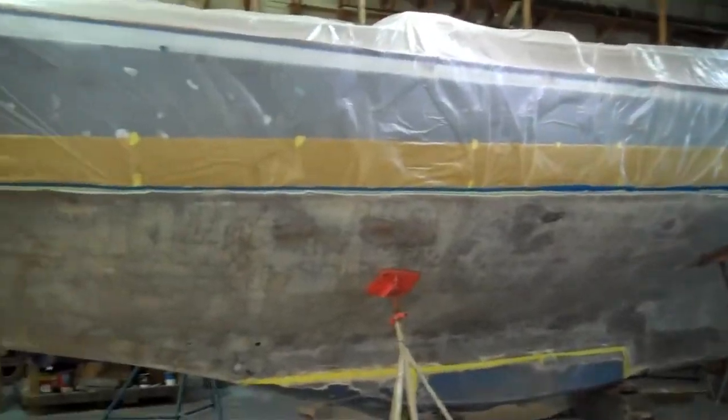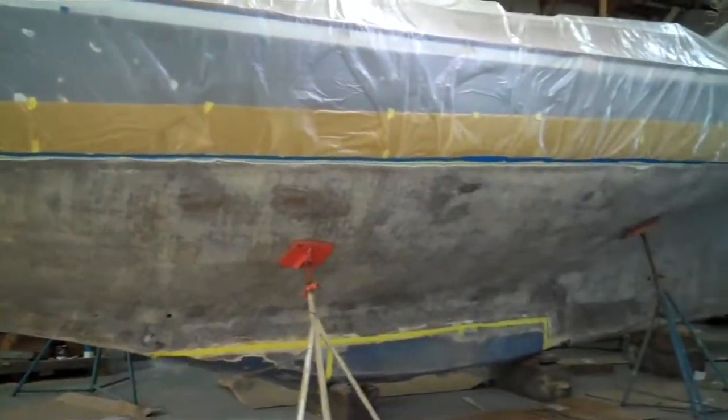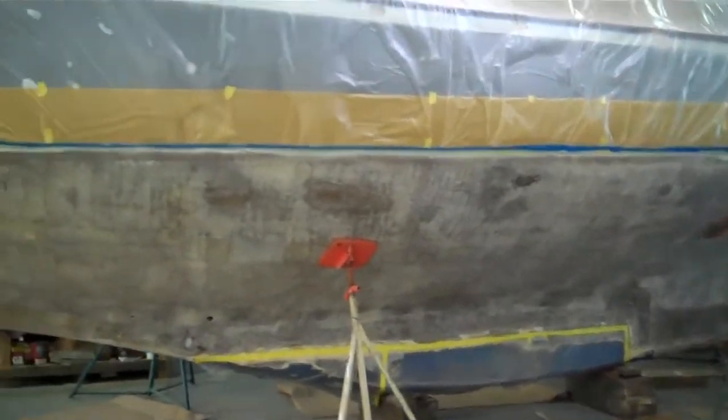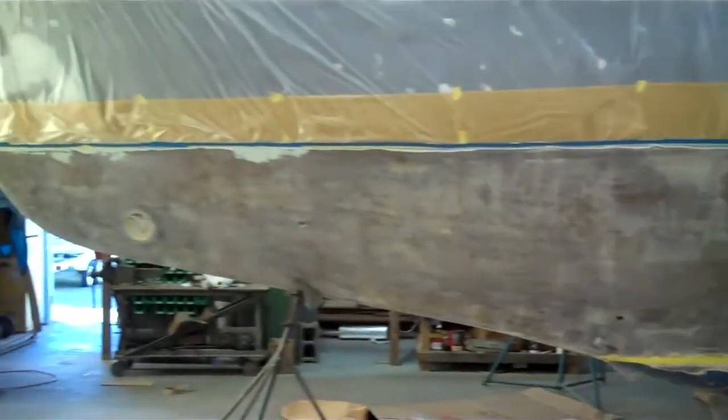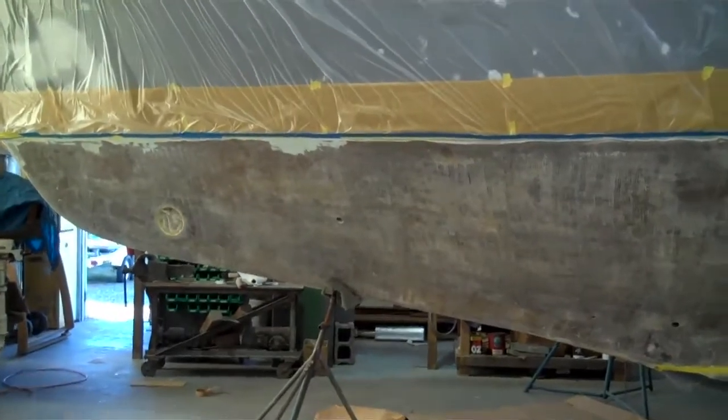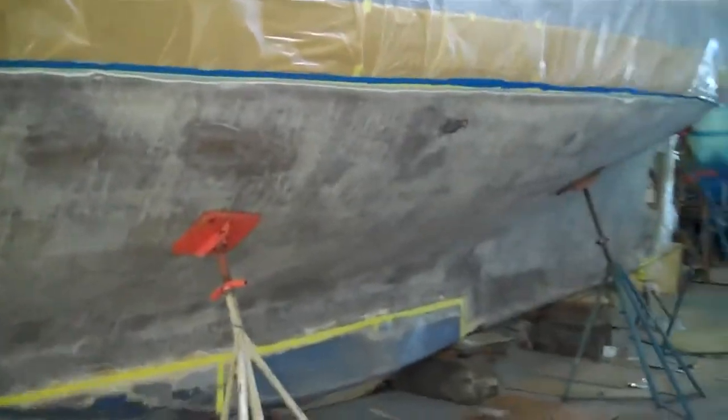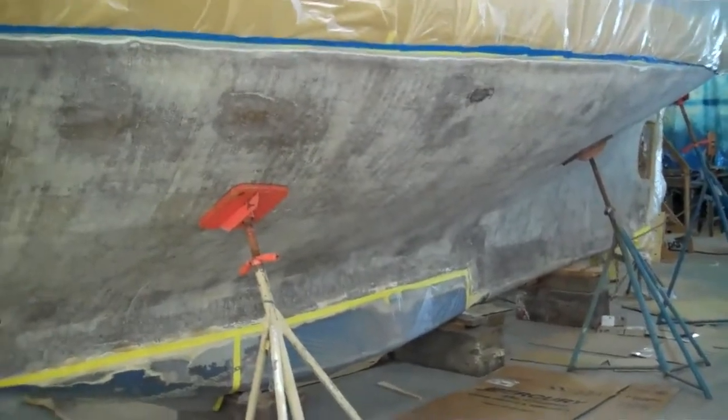They've peeled the boat, the bottom of it, taken all the gel coat off and gotten down into the structural glass in the bottom of it. What we're going to do is put a barrier coat and rebuild the bottom of the boat.